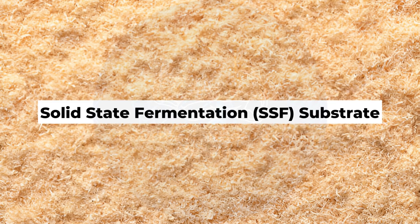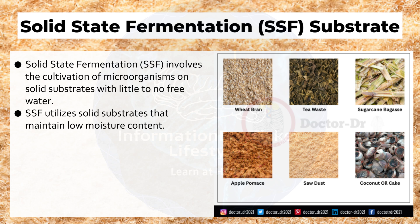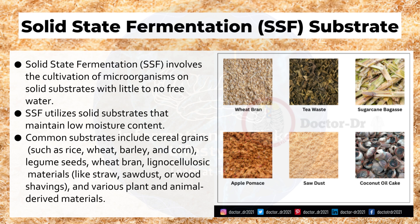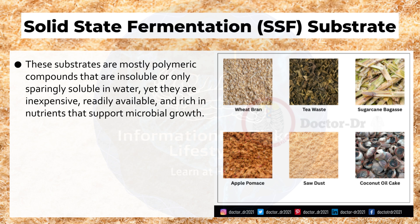Solid-state fermentation involves the cultivation of microorganisms on solid substrates with little to no free water, utilizing solid substrates that maintain low moisture content. Common substrates include cereal grains such as rice, wheat, barley, and corn; legume seeds; wheat bran; lignocellulosic materials like straw, sawdust, or wood shavings; and various plant and animal-derived materials. These substrates are mostly polymers that are insoluble or only sparingly soluble in water, yet they are inexpensive, readily available, and rich in nutrients that support microbial growth.